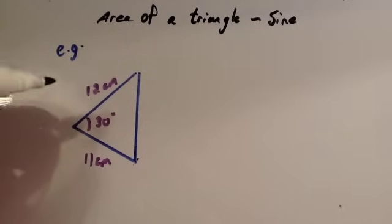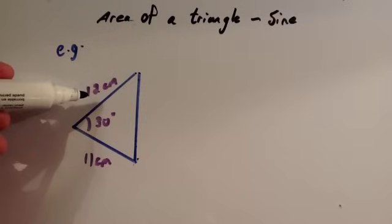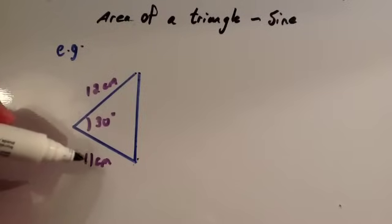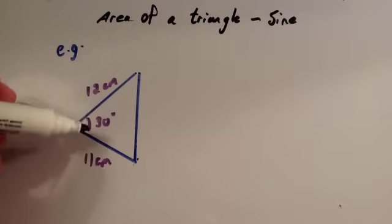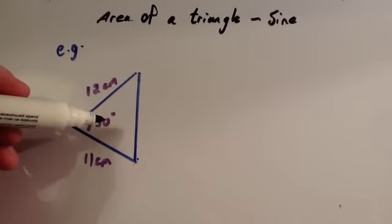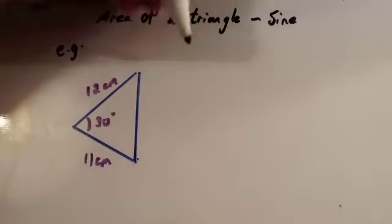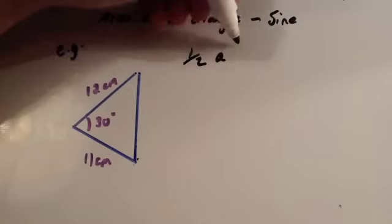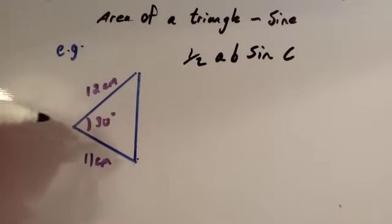We've got a triangle, one side is 12 centimeters, one side is 11 centimeters, and the angle enclosed between those two sides is 30 degrees. That means we can use the formula a half a b sine c, and this will allow us to work out the area of this triangle.